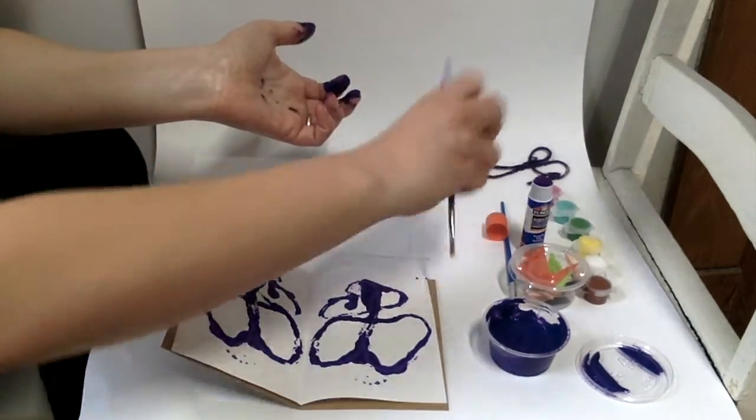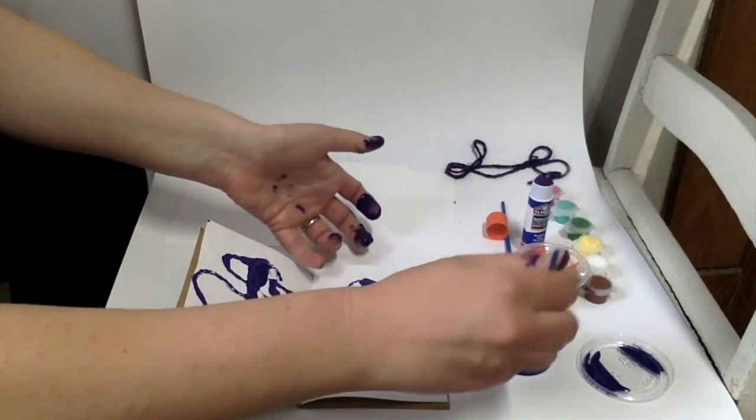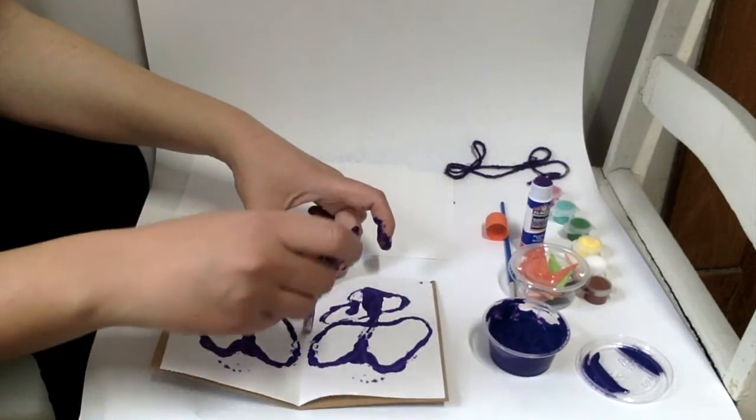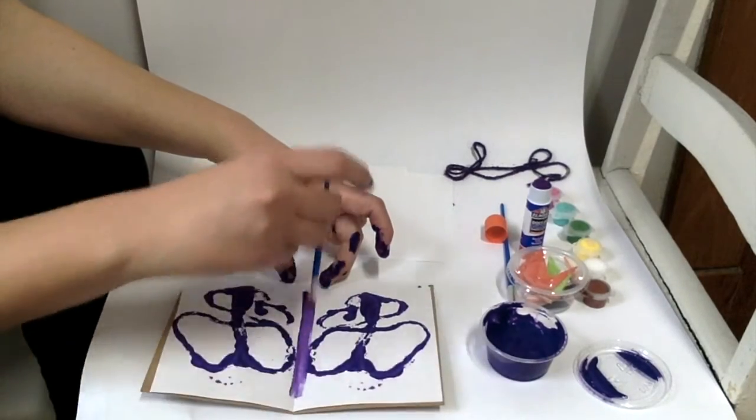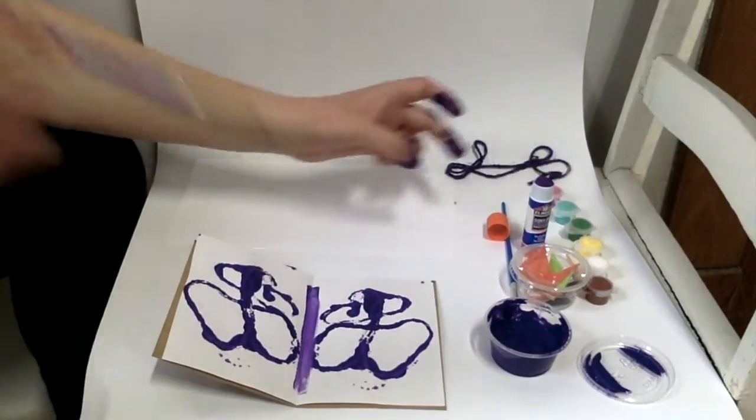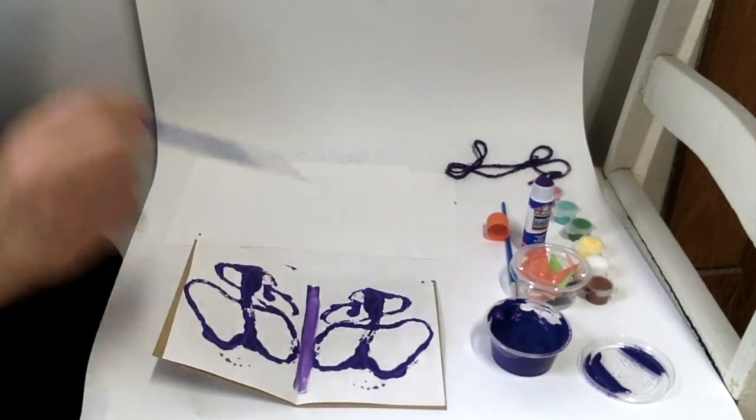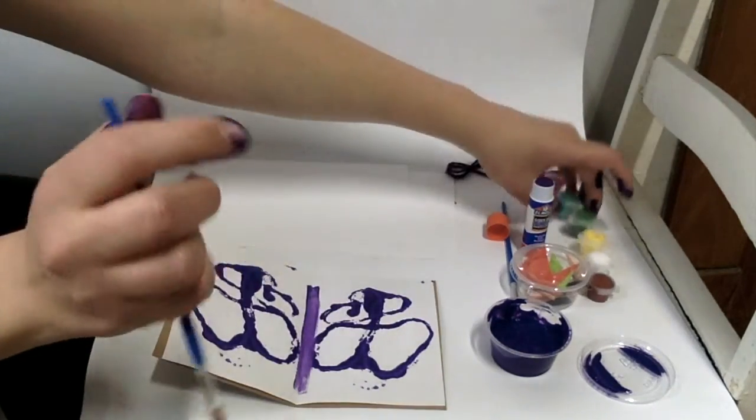Then you can use your brush. You can use the purple paint some more or one of your other colors in your amazing spring palette. Put the body of the butterfly down the center. And then you can use your other colors to fill in some of the spaces.